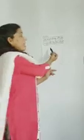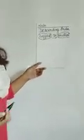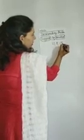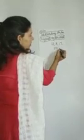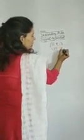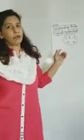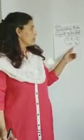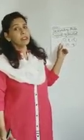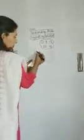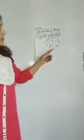Descending order means biggest to smallest. Here we have some numbers: 11, 8, 17, 10 and 4. We have to arrange these numbers in descending order — biggest to smallest number. So let's find out the biggest number and put it in the first place. I have put 5 places where we have to arrange these numbers.